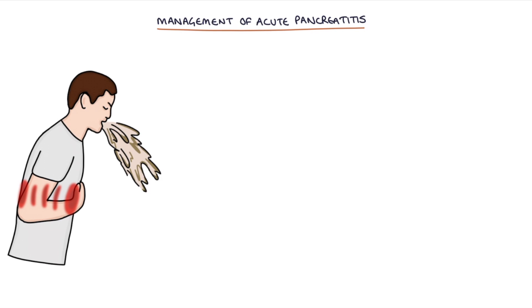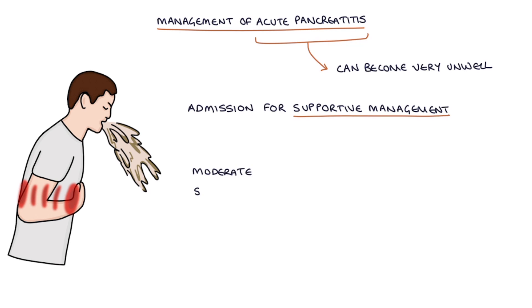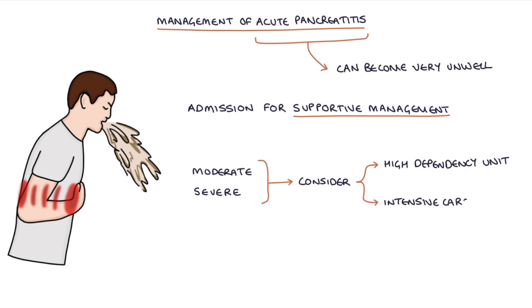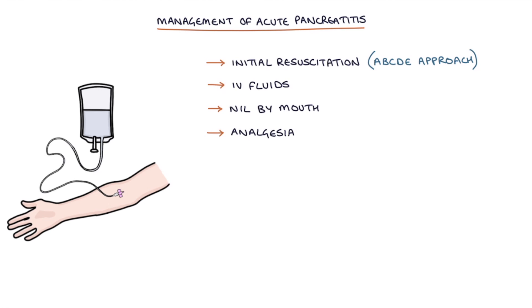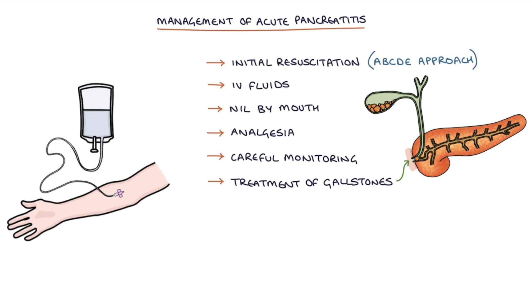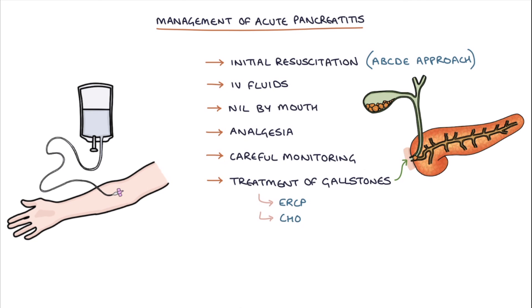Let's talk about the management of acute pancreatitis. Patients with acute pancreatitis can become very unwell rapidly and require admission for supportive management. Moderate or severe cases should be considered for HDU or ICU. Management involves initial resuscitation with an ABCDE approach, IV fluids, making the patient nil by mouth, analgesia, careful monitoring, and treatment of gallstones if present — for example with an ERCP procedure or a cholecystectomy.